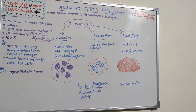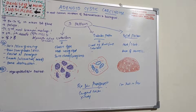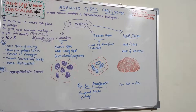Adenoid cystic carcinoma is a slow-growing but aggressive neoplasm with a remarkable capacity to recur and a profound tendency to invade perineural and lymphatic spaces. It is the most common neoplasm of the submandibular and sublingual salivary glands, and is also seen in minor salivary glands in the palate.